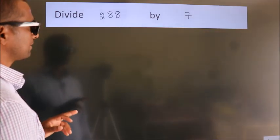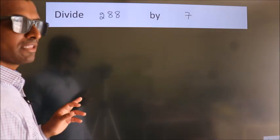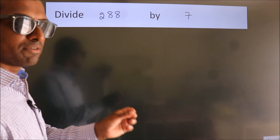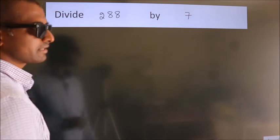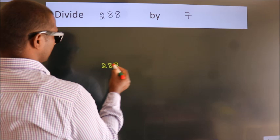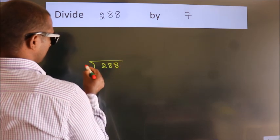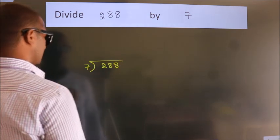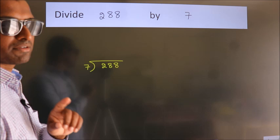Divide 288 by 7. To do this division, we should frame it in this way: 288 here, 7 here. This is your step 1.